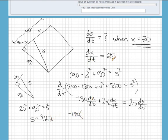Okay, so now we're going to plug all this information in. We know dx/dt is 25, so we plug that in here: -180(25) plus 2 times 70, because that's what x is when the runner is 20 feet away from third base, times 25, equals 2 times 92.2 times ds/dt.